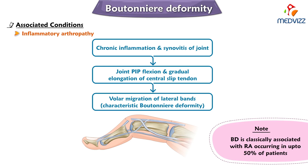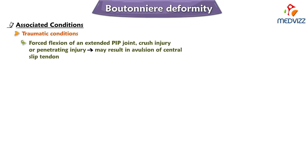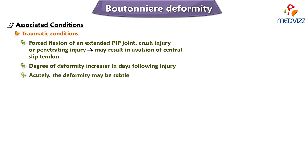Not only inflammatory arthropathy such as rheumatoid arthritis, but traumatic conditions can also cause boutonniere deformity. For example, forced flexion of an extended proximal interphalangeal joint, crush injury, or penetrating injury may result in avulsion of the central slip tendon. Typically, the degree of deformity increases in the days following the injury, and acutely the deformity may be subtle.